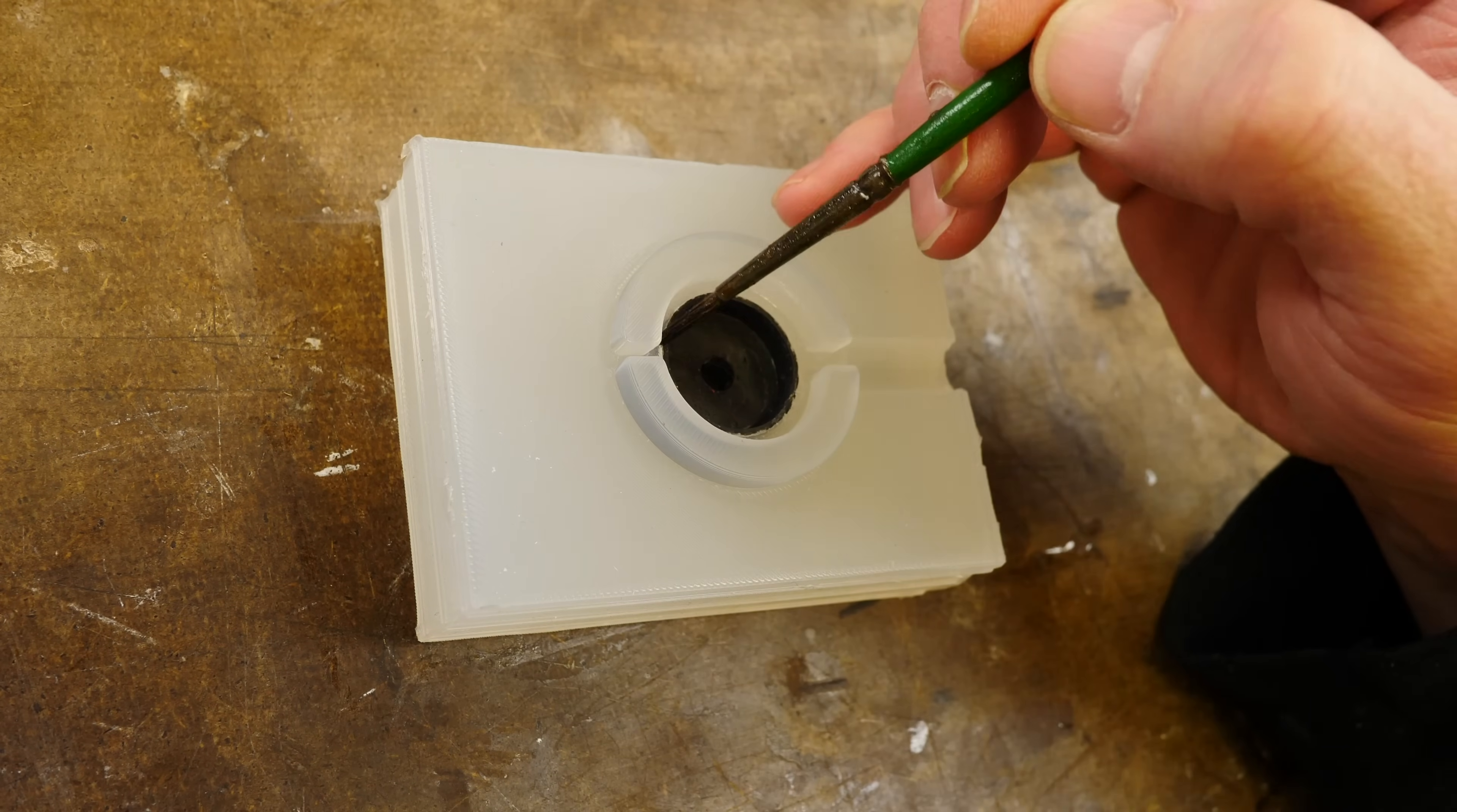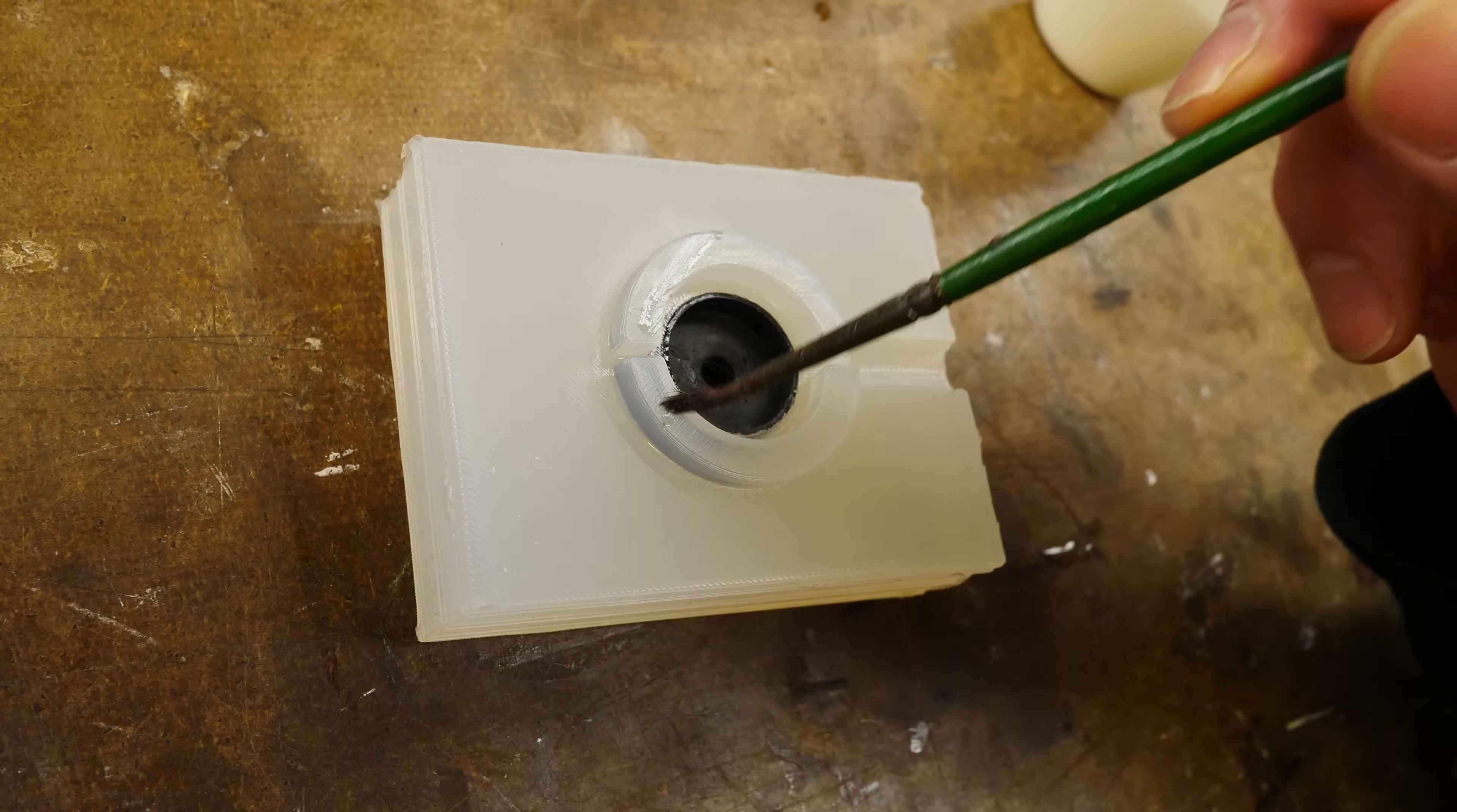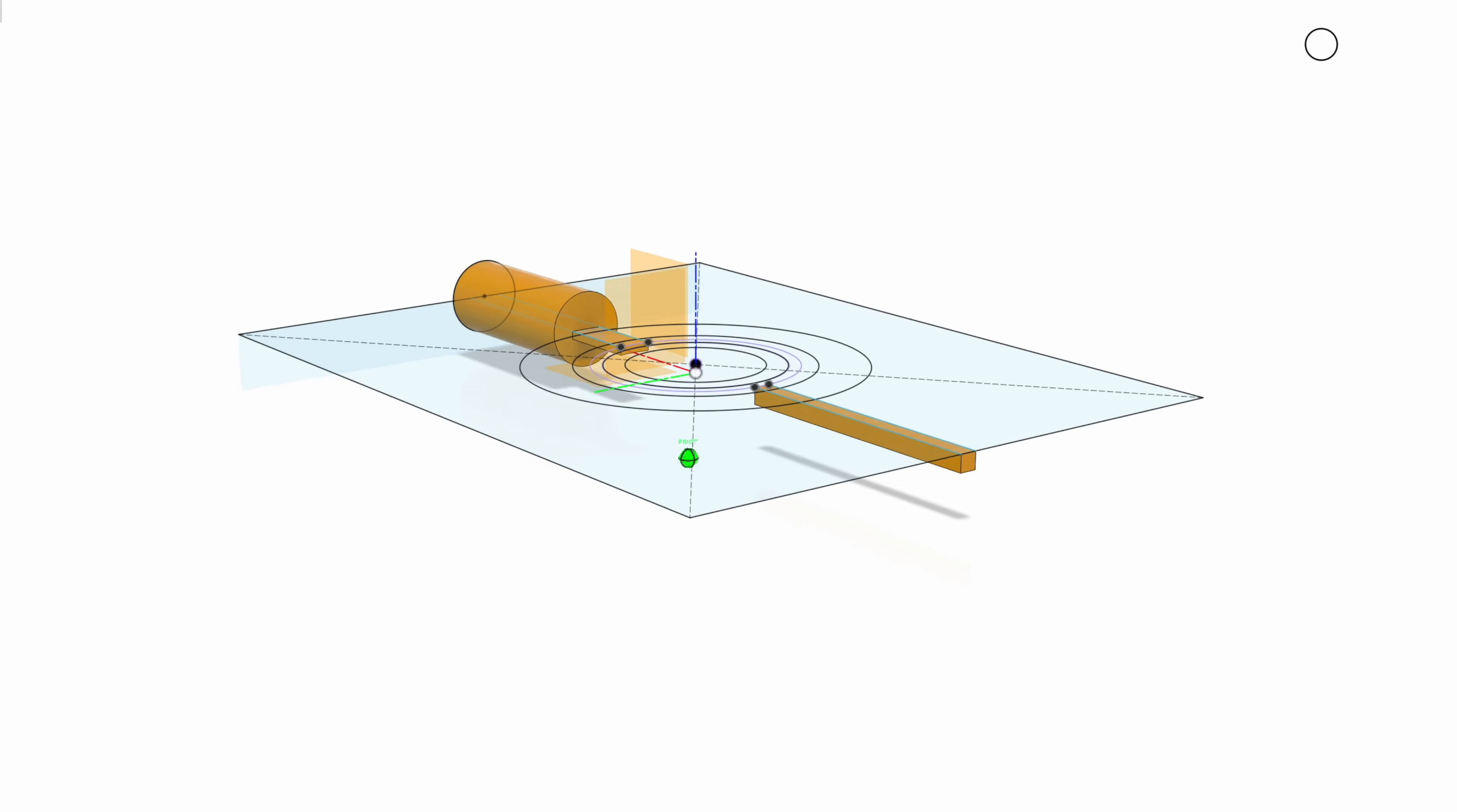Next, we're going to put on some release agent. We need to put release agent where there's silicone so that when we pour the second half of the mold, the silicone doesn't stick together. I do the release agent here first because it'll be tricky to get in there with a brush now that the other part has been inserted into the mold.